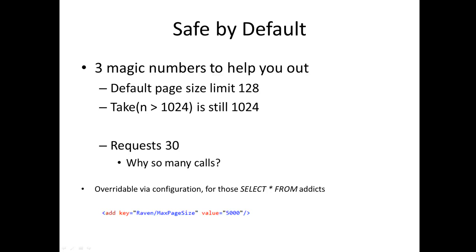You can obviously override that with a larger skip and take. If I go skip zero, take a million — Raven says no, don't do that, maybe you mucked up the value. Raven stops at 1024. And this is quiet as well — you don't get an exception. It just says 'I think you went too far with your take.'